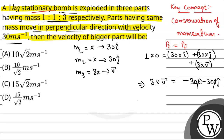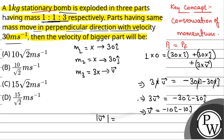After x gets cancelled, we have 3v = magnitude of (−30 î-cap − 30 ĵ-cap). So the magnitude of the velocity of the bigger part will be root over (10² + 10²), which equals 10√2 meters per second. So the correct option is option A.